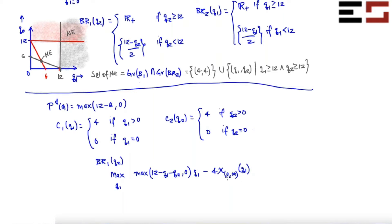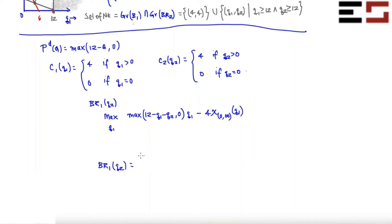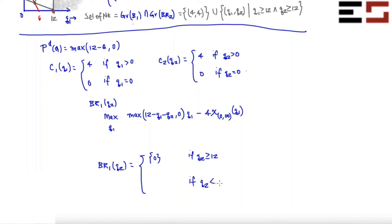The characteristic function is a function of q1: whenever q1 is between 0 and infinity it equals 1, and when q1 is zero it equals 0. If q2 is greater than or equal to 12, this expression will be zero, so you will choose zero units of output. You don't choose positive output because you would have to incur the fixed cost, so you maximize profit at the single point zero.